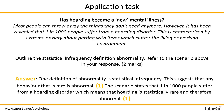Now you have your response, check your answer against the suggested answer on the screen. One mark will be awarded for the outline part of the question and the second mark for the application — which was the reference to one in one thousand people who hoard. The answer is broken into two parts so you can see where each mark was awarded. One definition of abnormality is statistical infrequency, which suggests that any behaviour that is rare is abnormal — that's the outline, worth one mark. The scenario states that one in one thousand people suffer from a hoarding disorder, which means hoarding is statistically rare and therefore abnormal — that's the second mark for AO2 skills.